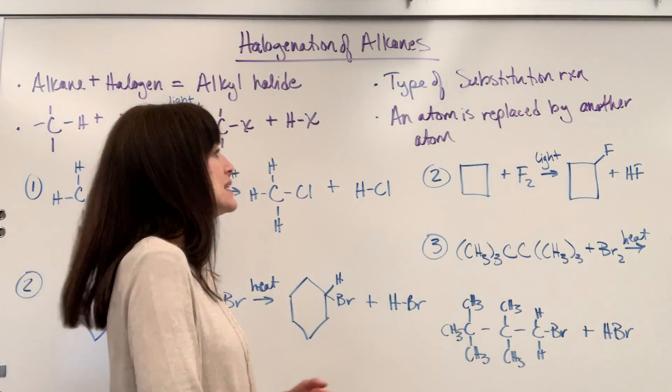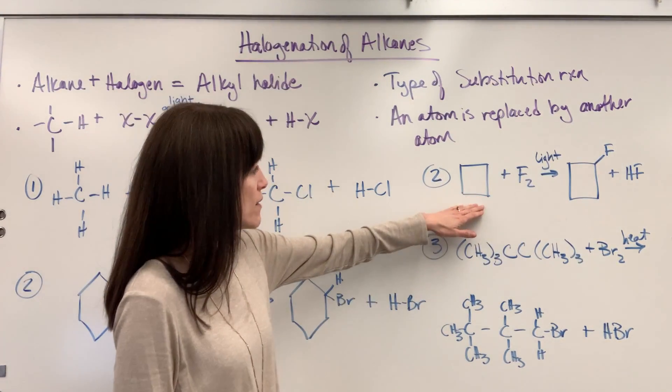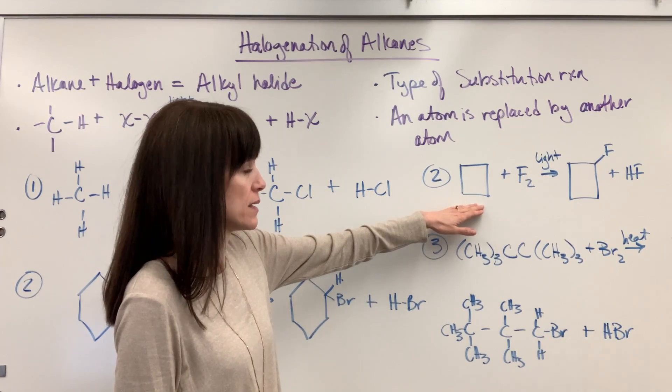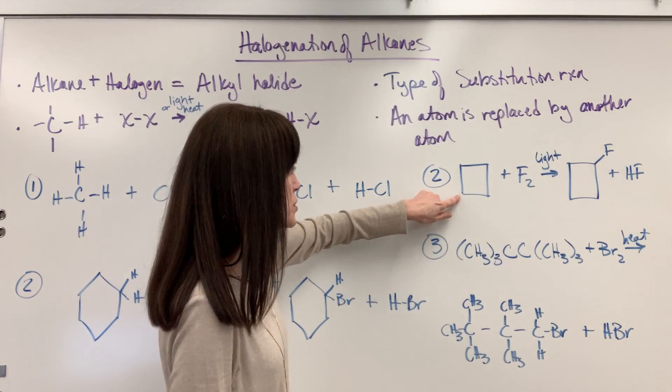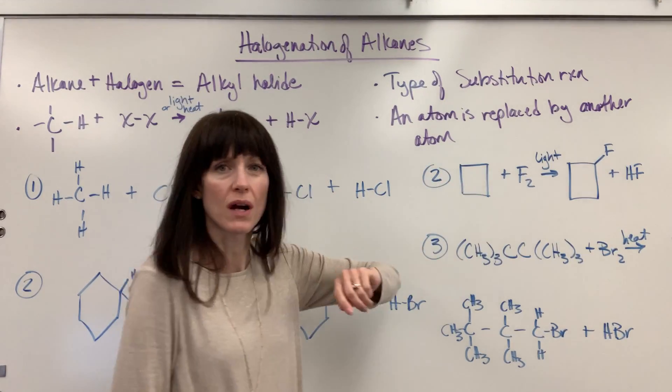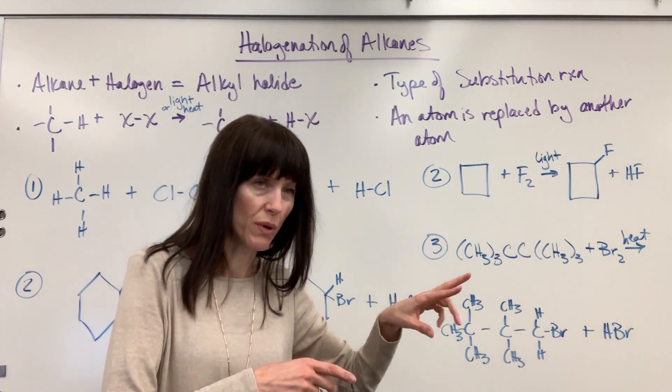So a couple of different ways that you could see this in a question. Here's our reaction. You're going to have a butane plus a fluorine. We're going to add light to this. Now you know that there are two hydrogens on each of those carbons. Each carbon has two bonds to carbon, so it'd have two hydrogen bonds.